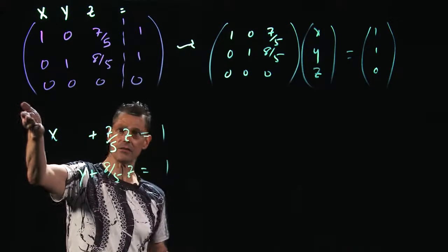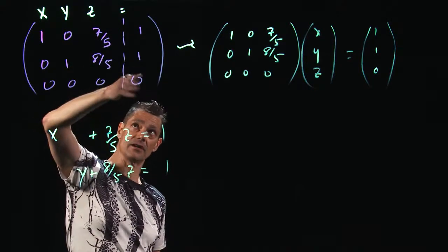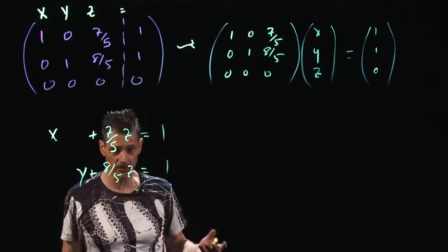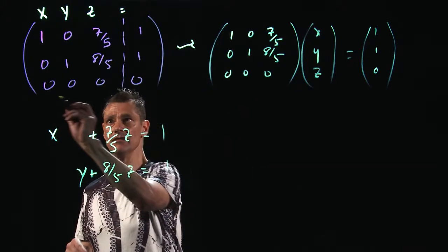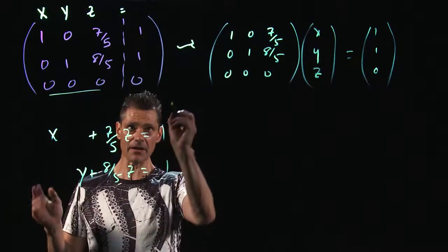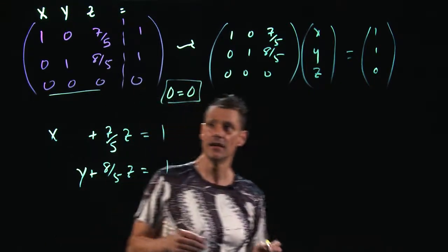And now what are we to do with this? This says 0x, 0y, 0z equals 0, 0 equals 0. Incidentally, this is a very important thing to think about here. This bottom row says 0 equals 0. What that means is that...